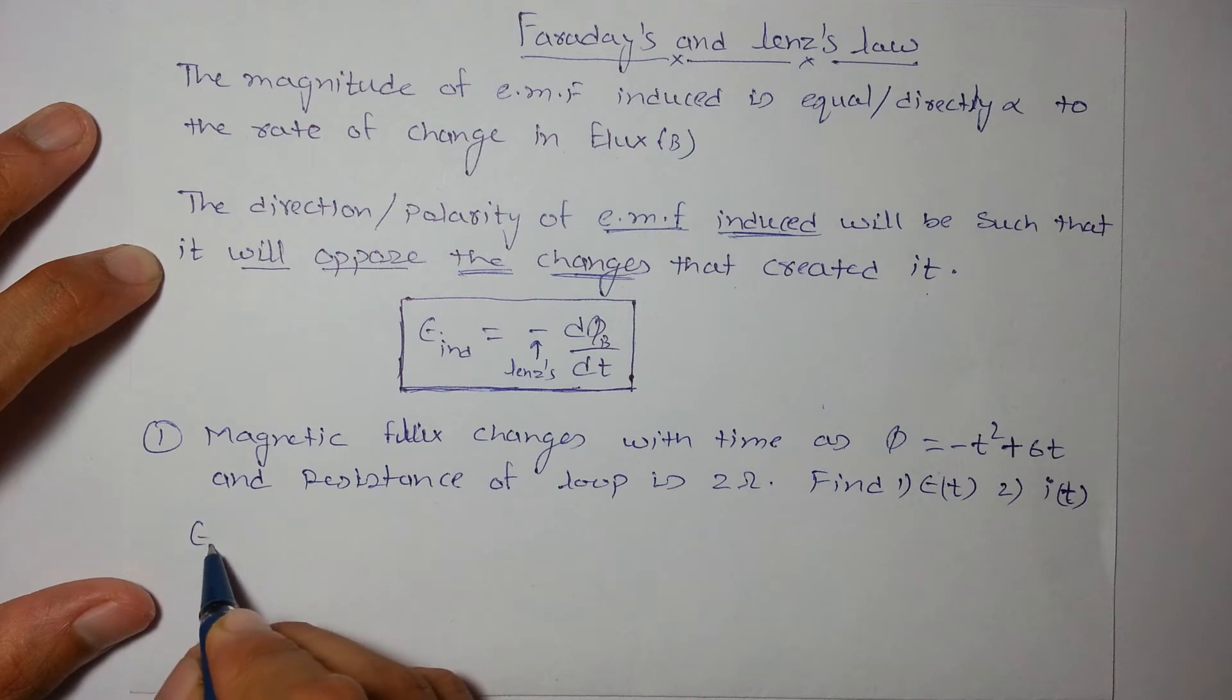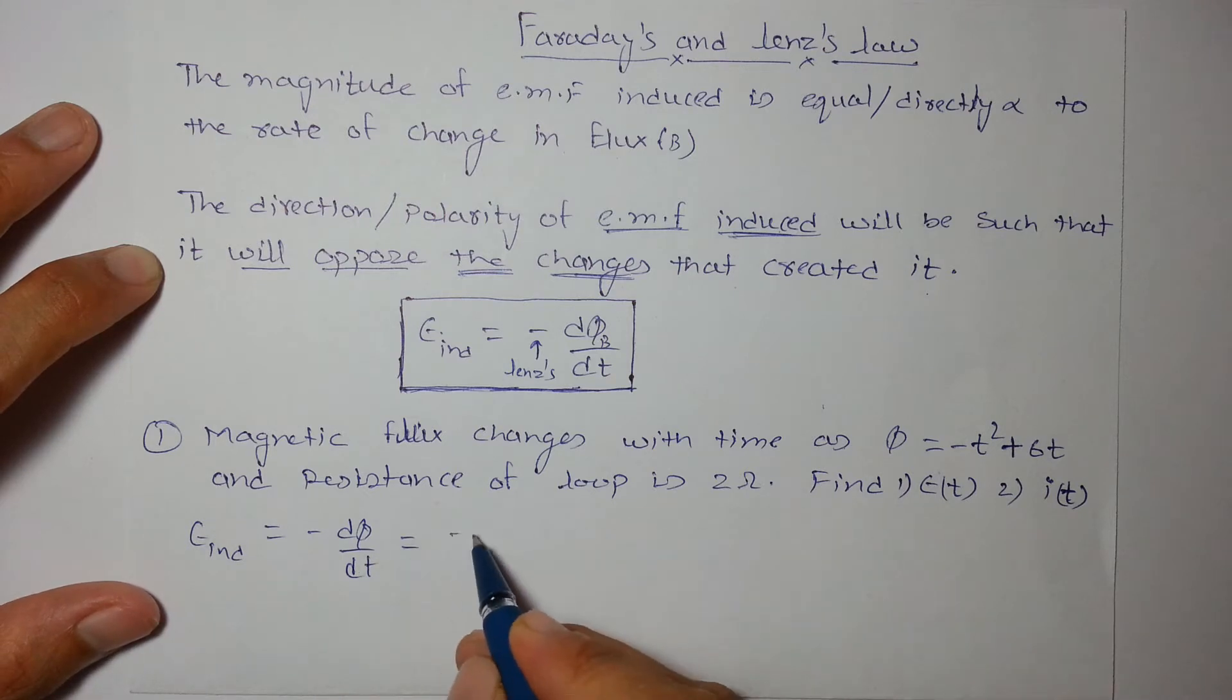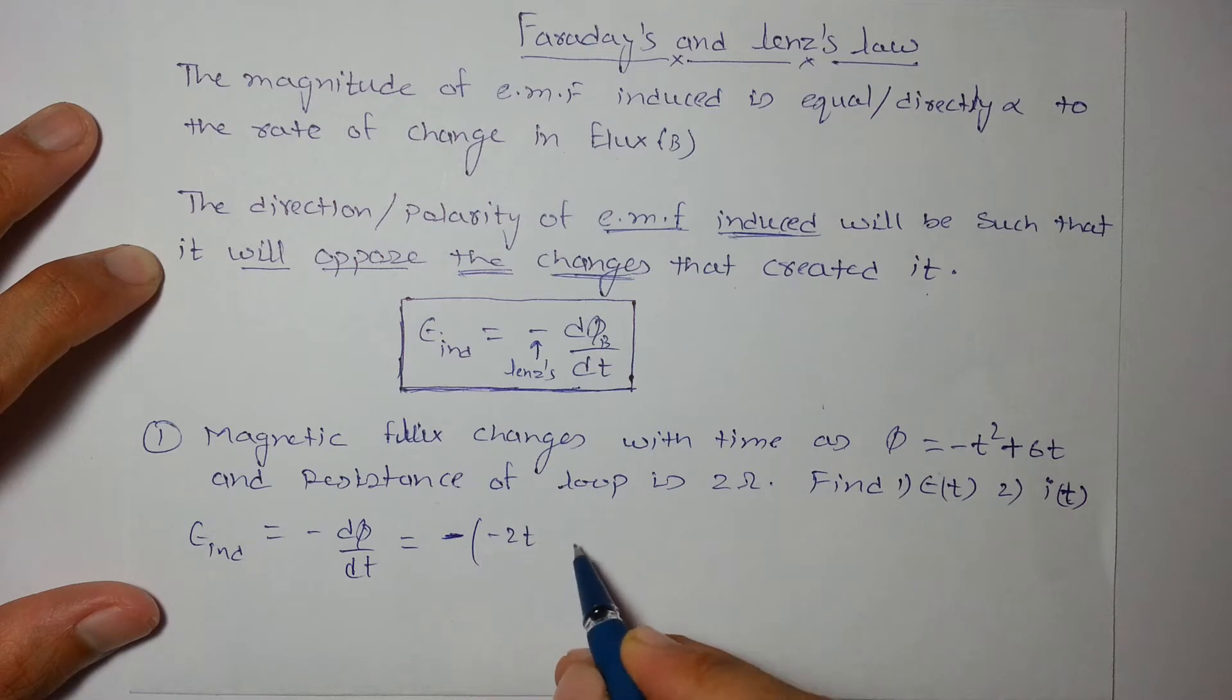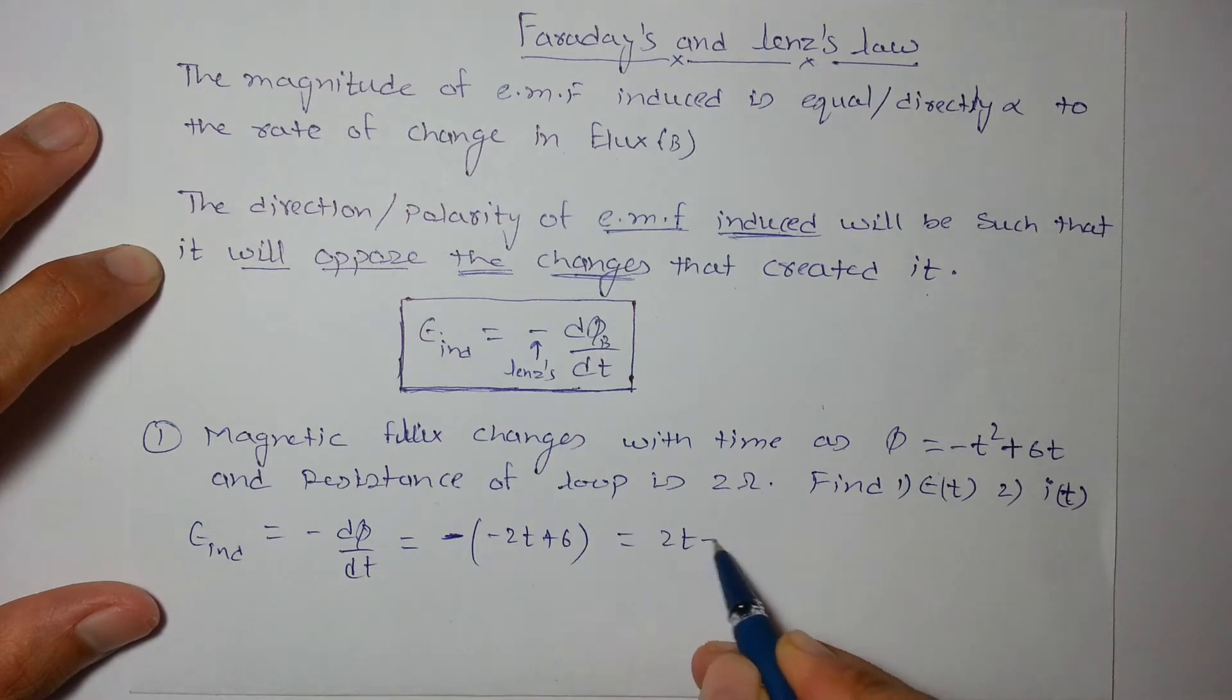Obviously, as we know the definition, EMF induced is -dΦ/dt, so we just differentiate it and put an extra negative sign: -(-2t + 6), that will be 2t - 6. At any time I can give you the value of induced EMF, just plug the value of t here and you will get it.